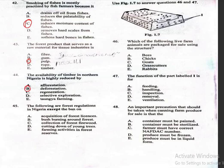Question 45: The following are forest regulations in Nigeria except the ban on A, acquisition of forest licences; B, bush burning around forests; C, collection of forest firewood; D, cutting down of young trees; E, farming activities in forest reserves. The correct answer is A, acquisition of forest licences.